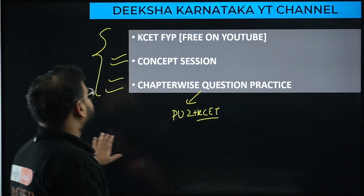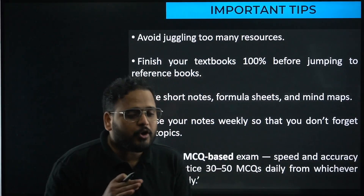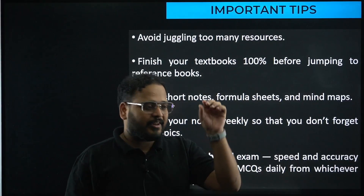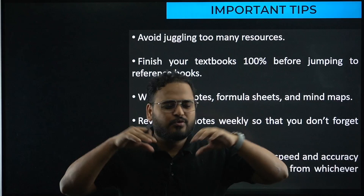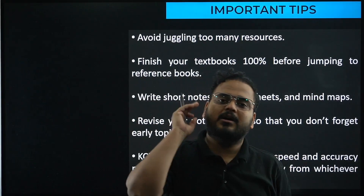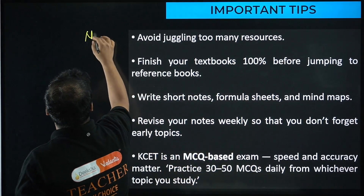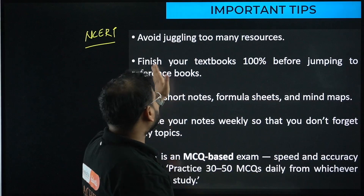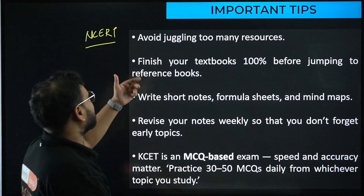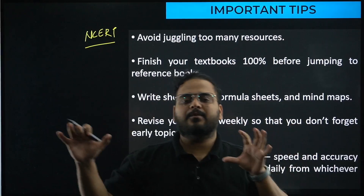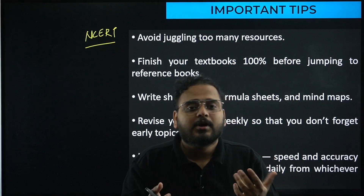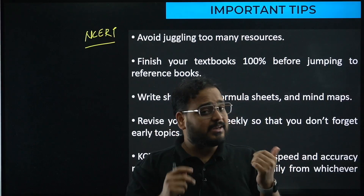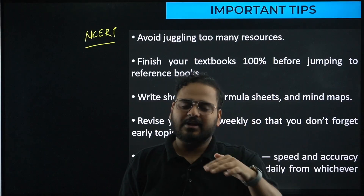Now for important dos and don'ts. First: avoid juggling too many resources. Having five or six books and taking one thing from each creates confusion and kills your determination. For KCET, stick to NCERT for theory — just one book. For question practice, use one question bank. Similarly, for YouTube channels, if you're watching one channel, stick to it. If you feel we are missing something, leave a comment and we will resolve it.